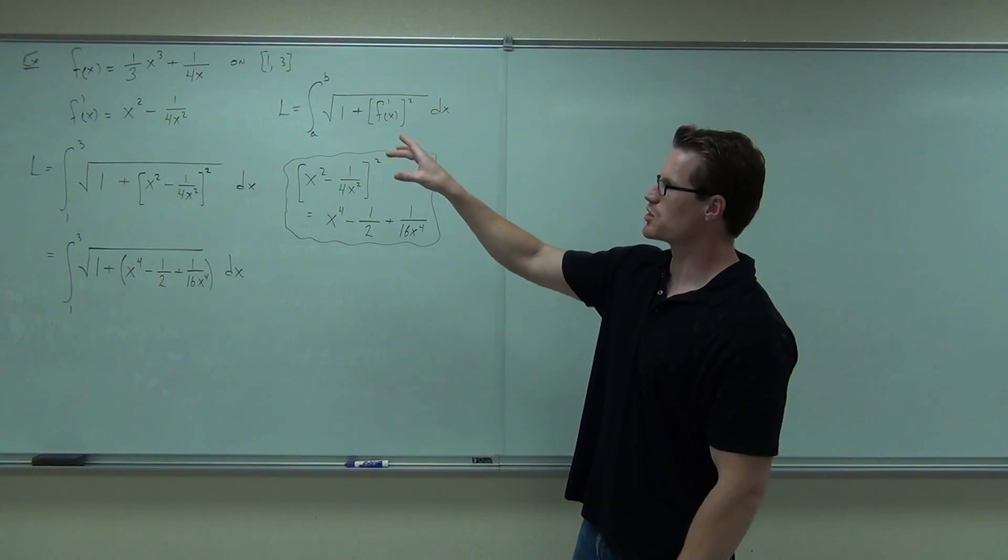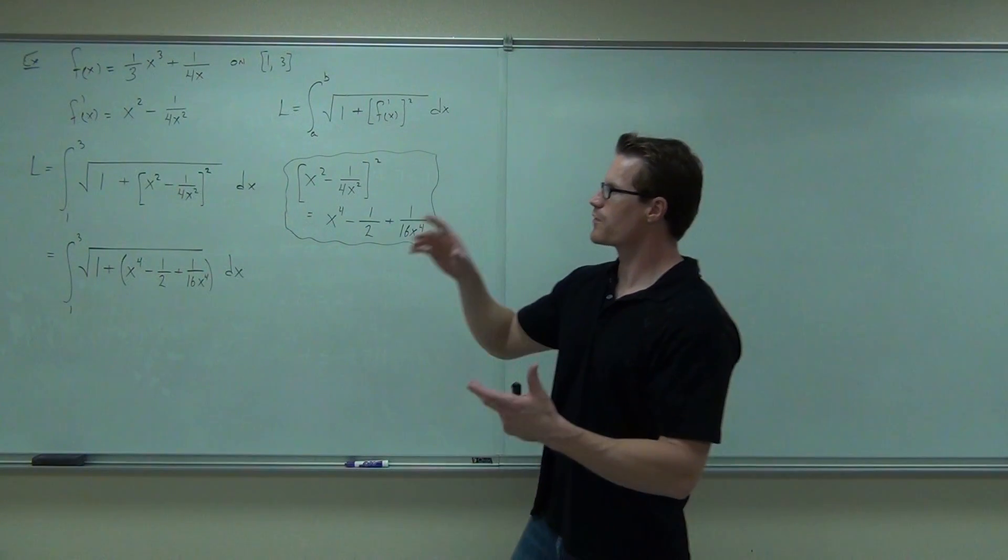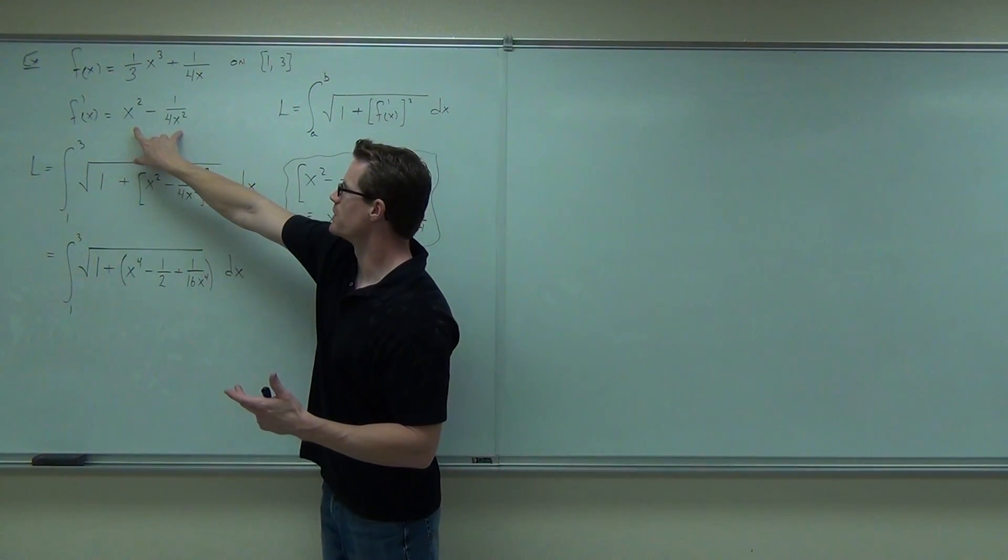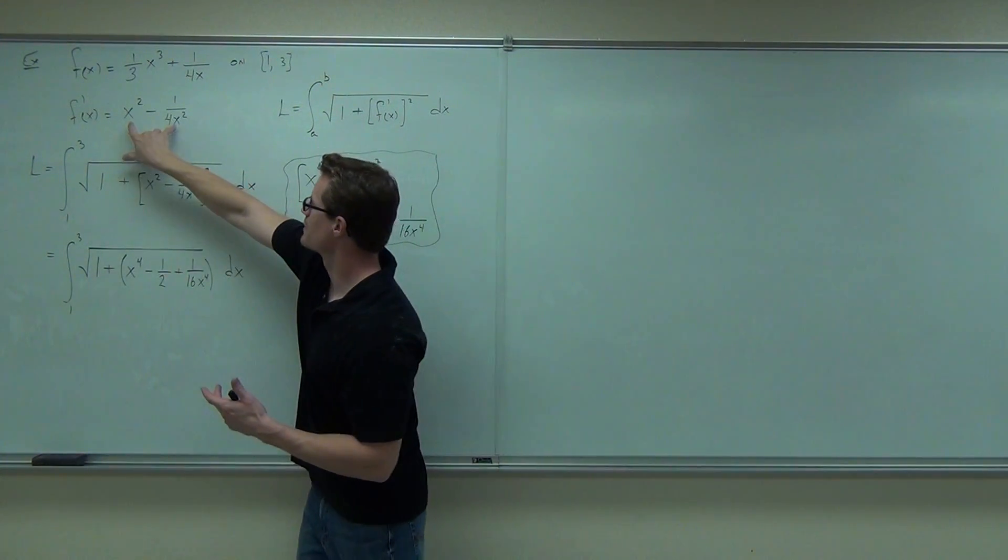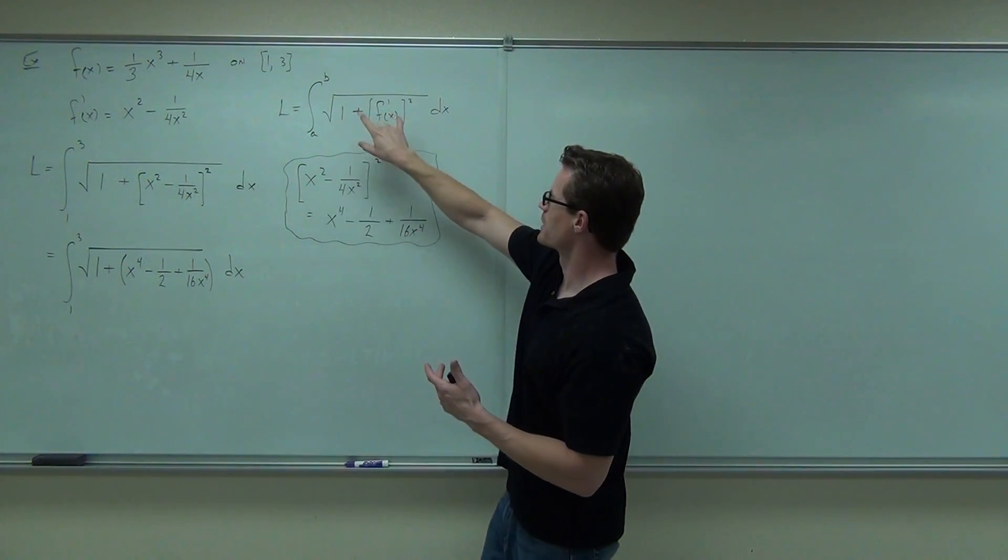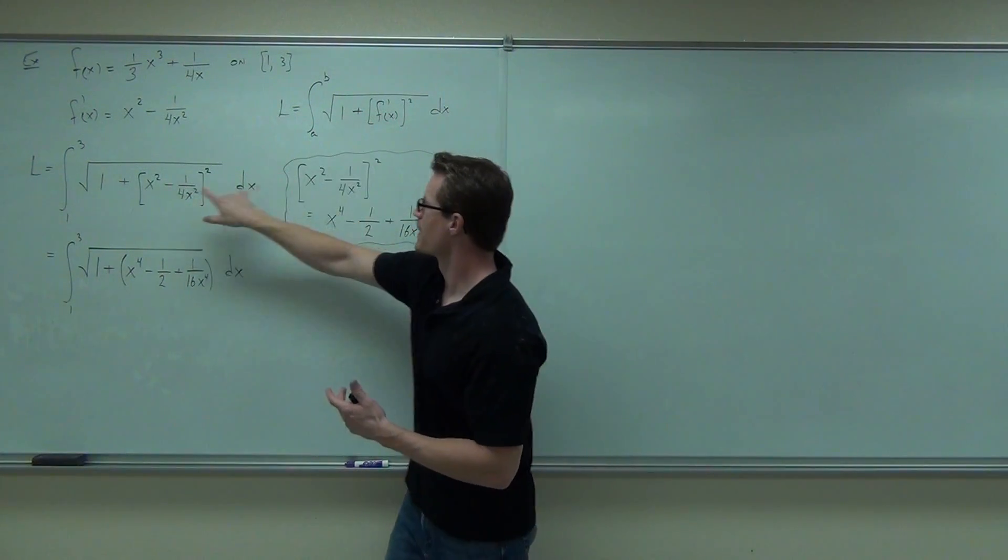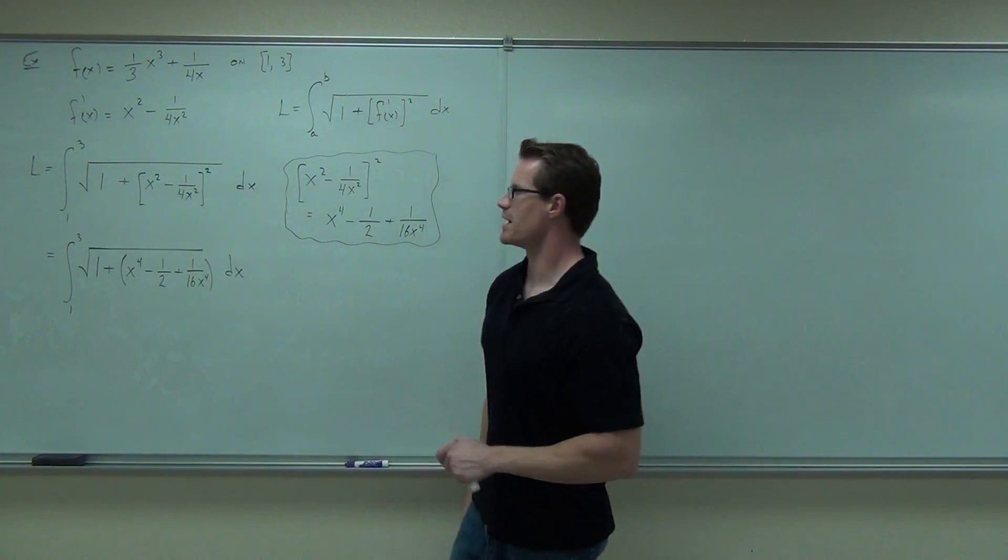So our function is one third x cubed plus one over four x. We've gone ahead and found the first derivative. So what we're doing here is we're just taking this first derivative, plugging it into this formula.